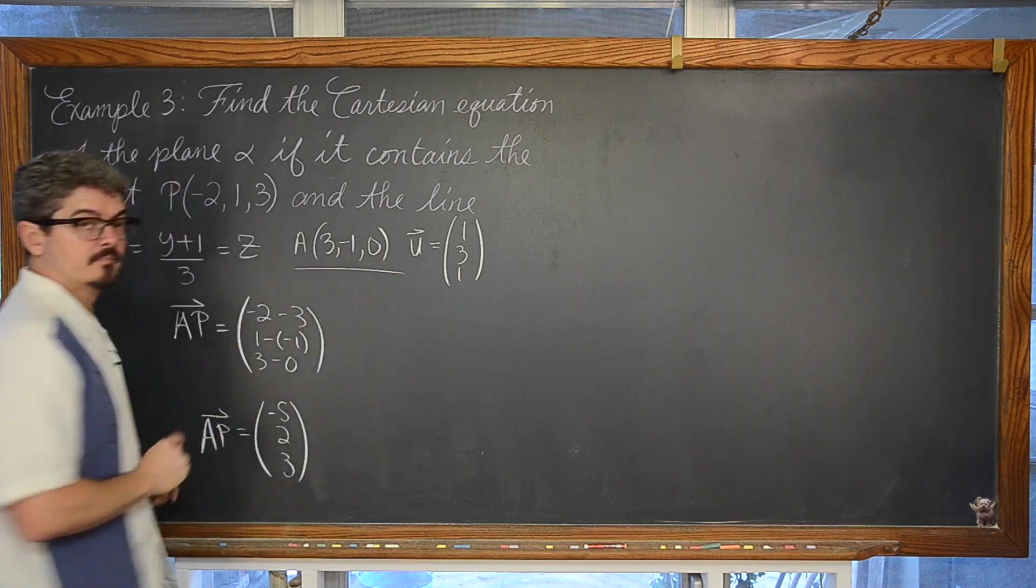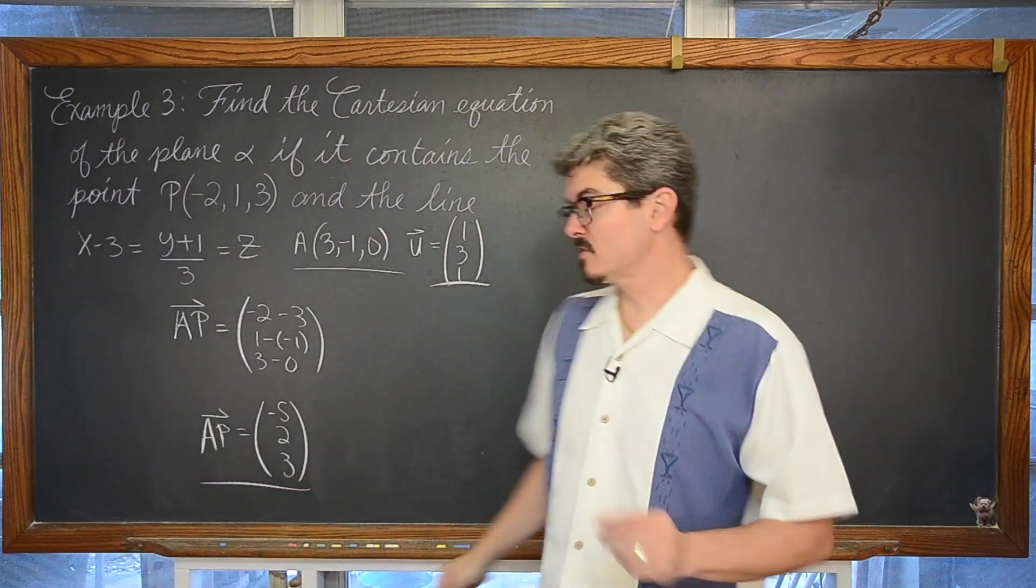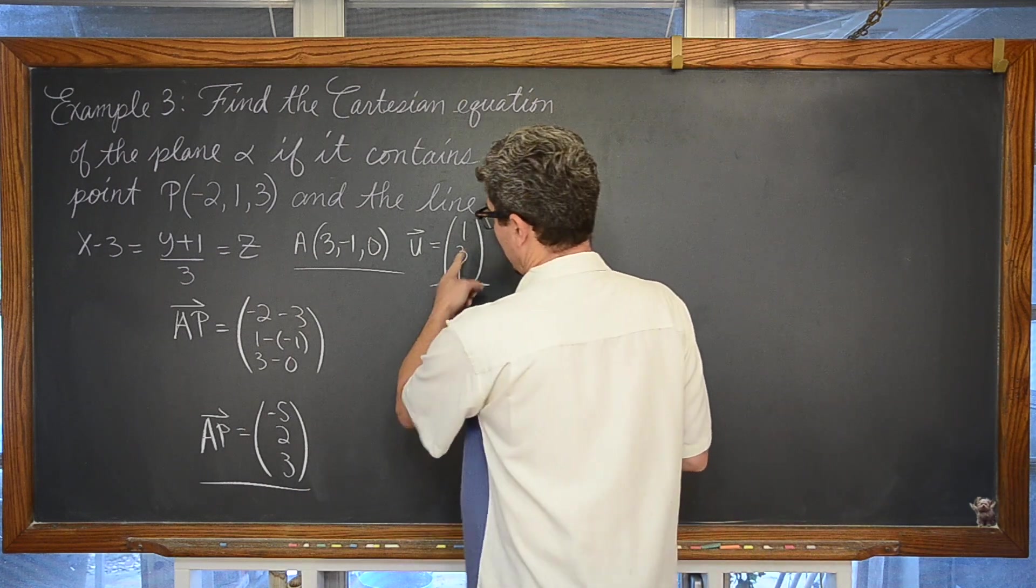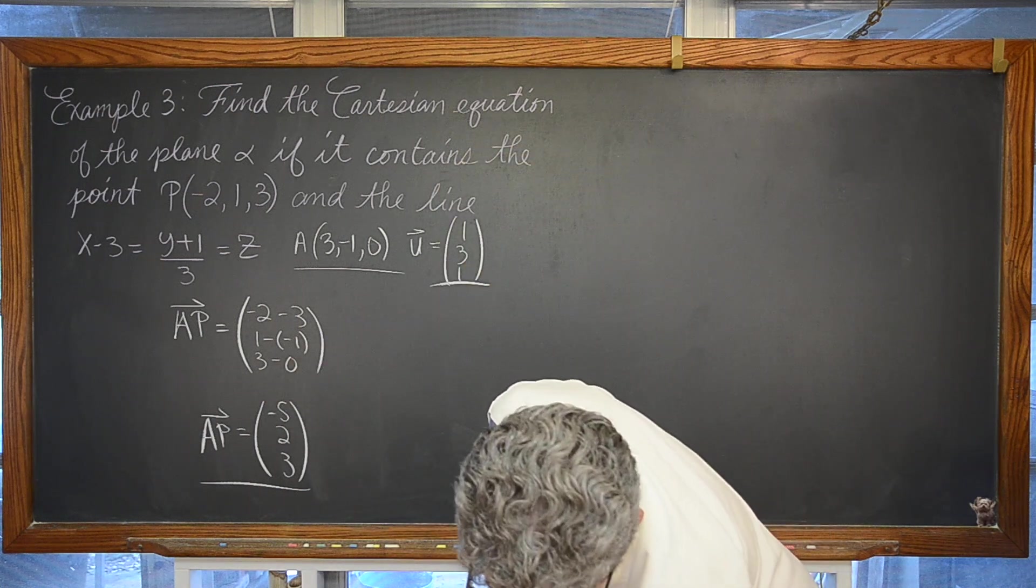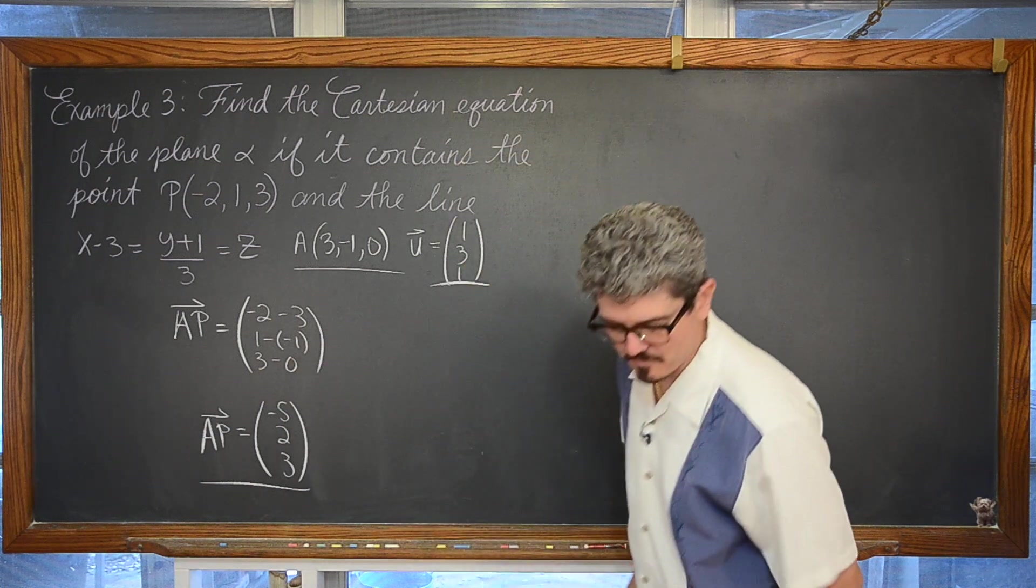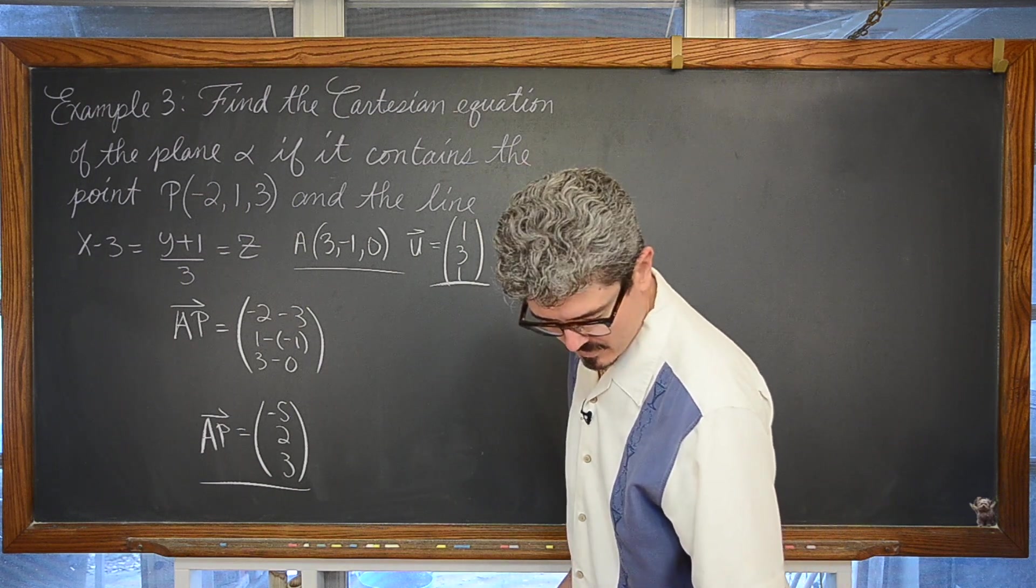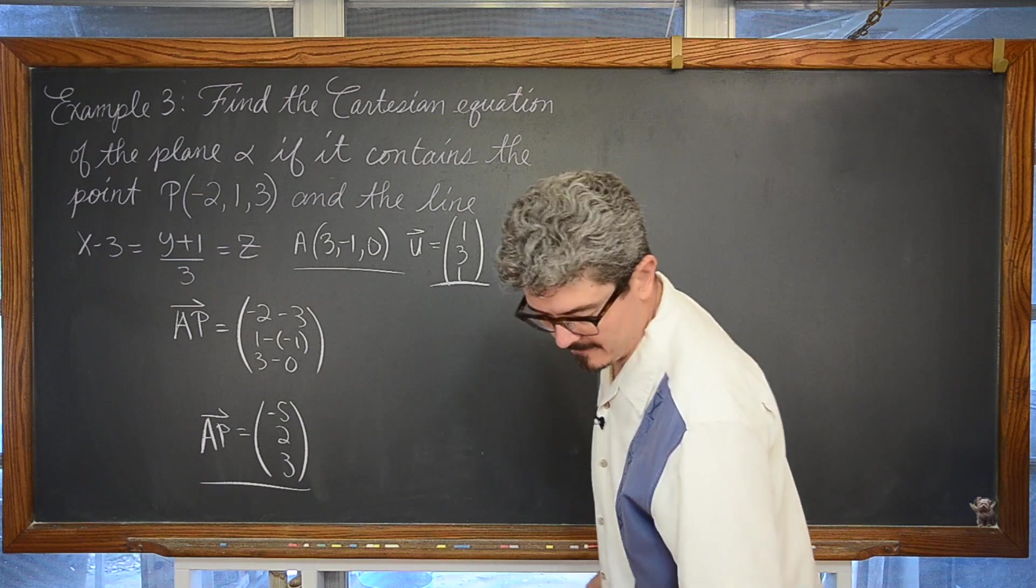So we have a point and we have two non-collinear directional vectors that are together the gradient of this plane. And these are not scalar multiples of each other, so they are not parallel. Now I just want to make sure that I have not written an incorrect number because I did some mental math incorrectly.